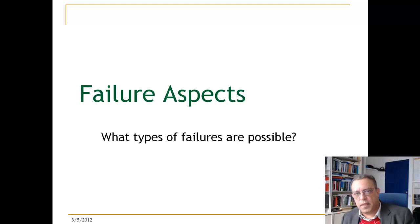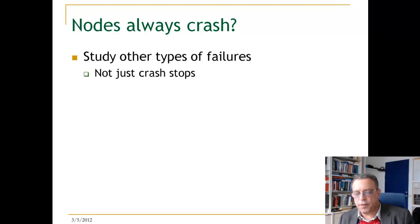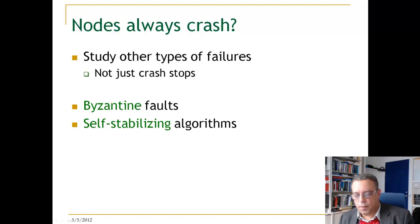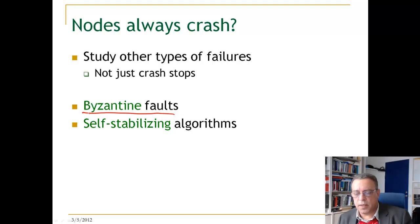When we think about failure, we often think about nodes crashing, but there are many other types of failure. We are going to study Byzantine failures, where nodes can behave arbitrarily — sending wrong messages, omitting messages, or not adhering to the protocol. These can be malicious nodes or nodes running faulty software.